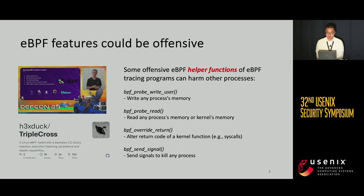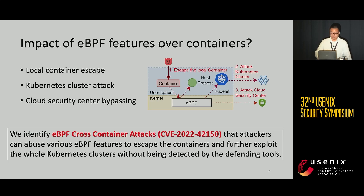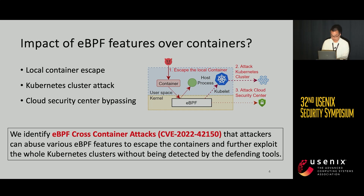Over the past three years, it has been discovered that many eBPF features can be exploited to build Linux rootkits, and several talks at DEF CON and Black Hat have shown that some offensive eBPF helpers can harm other processes. For example, bpf_probe_write_user allows eBPF programs to modify arbitrary memory of a process and can manipulate the syscalls of those processes. We identified three different categories of attacks triggered by these offensive eBPF features: local container escape, Kubernetes cluster attack, and cloud security center bypassing. We call these attacks eBPF cross-container attacks, and we also found a new CVE.